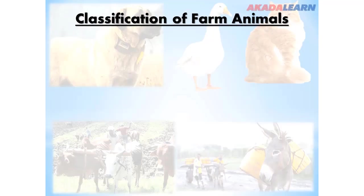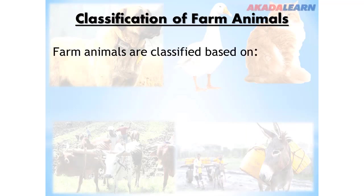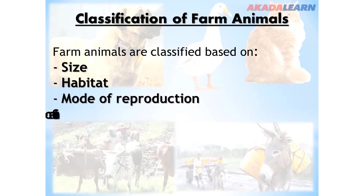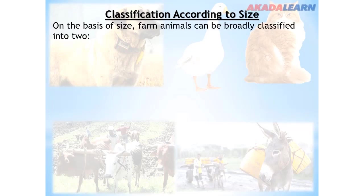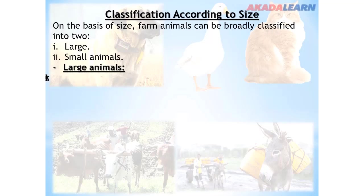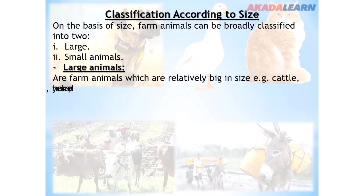Farm animals are classified based on size, habitat, mode of reproduction, and stomach type. Classification according to size: on the basis of size, farm animals can be broadly classified into two groups — large animals and small animals. Large animals are farm animals which are relatively big in size; for example, cattle, horse, donkey, and camels.